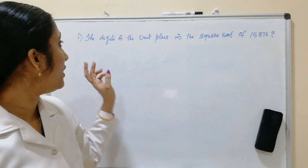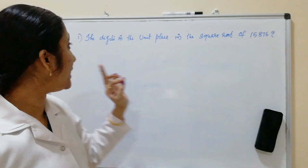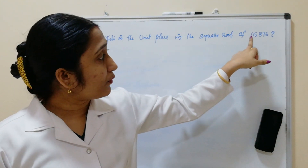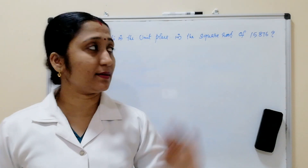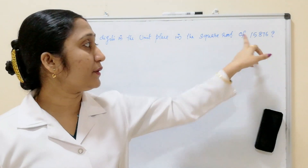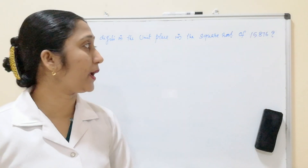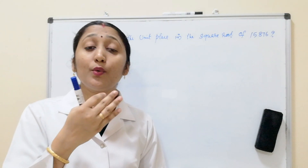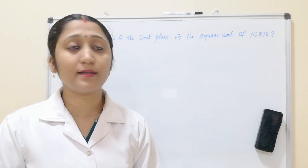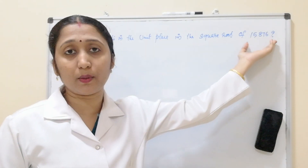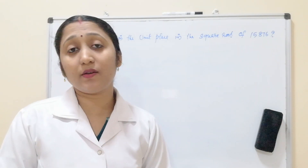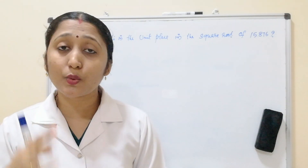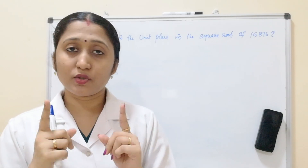Based on square roots, the question is: what is the digit in the unit place in the square root of 15876? This type of question will come in RBA, CBA, or SSC examinations — this is a most important type of problem.